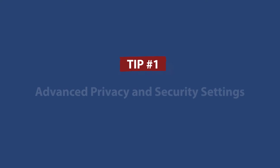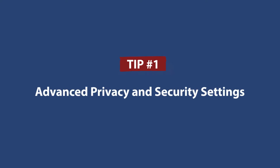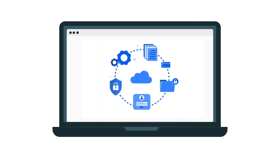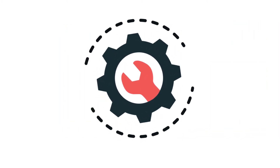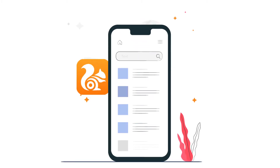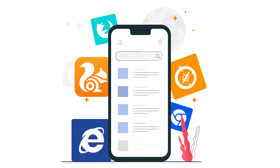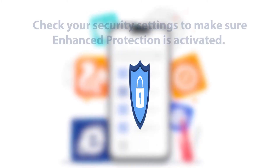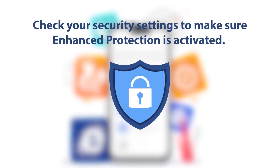Number one: advanced privacy and security settings. Many internet browsers come with settings that can help protect you online. But did you know that these settings aren't activated automatically? For example, if you use the most popular US browser, Google Chrome, check your security settings to make sure enhanced protection is activated.